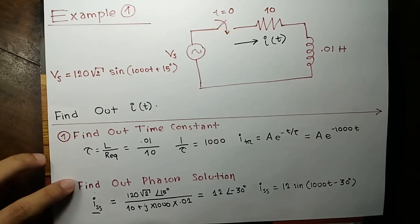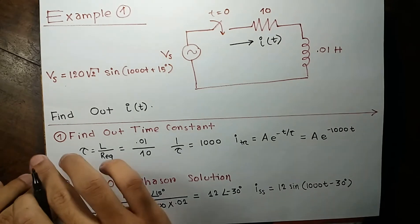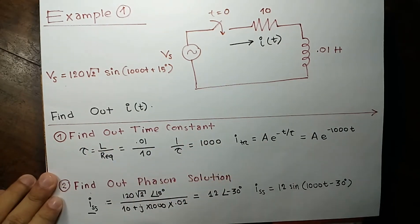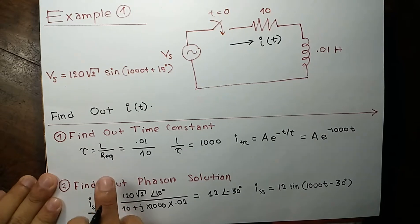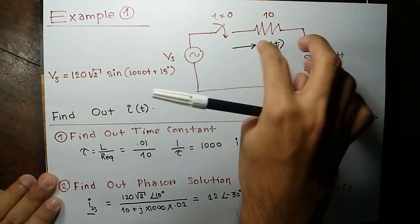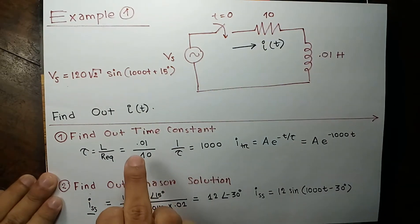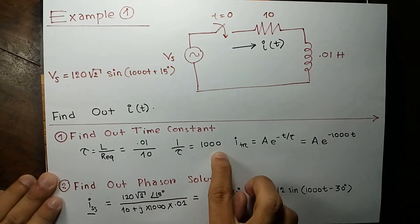So I will go systematically. And we have done parts of work here. The first approach was to find out time constant. Time constant is L over R equivalent. For this simple circuit R equivalent is really this resistance, 10. So it will be 0.01 over 10. And 1 by tau will become 1000.